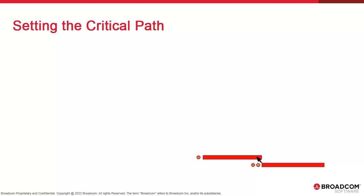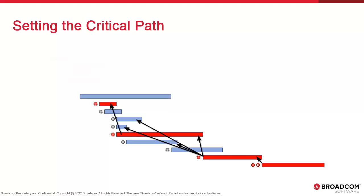This job has four predecessors. AAI will select the predecessor with the longest runtime and include it in the critical path. It moves backwards and finds only one predecessor, so that job is included. Upstream we find four jobs with the same start time. One ran the longest; however, there is no dependency condition between that job and the current critical path job, so it's simply not a predecessor and is not included in the critical path.